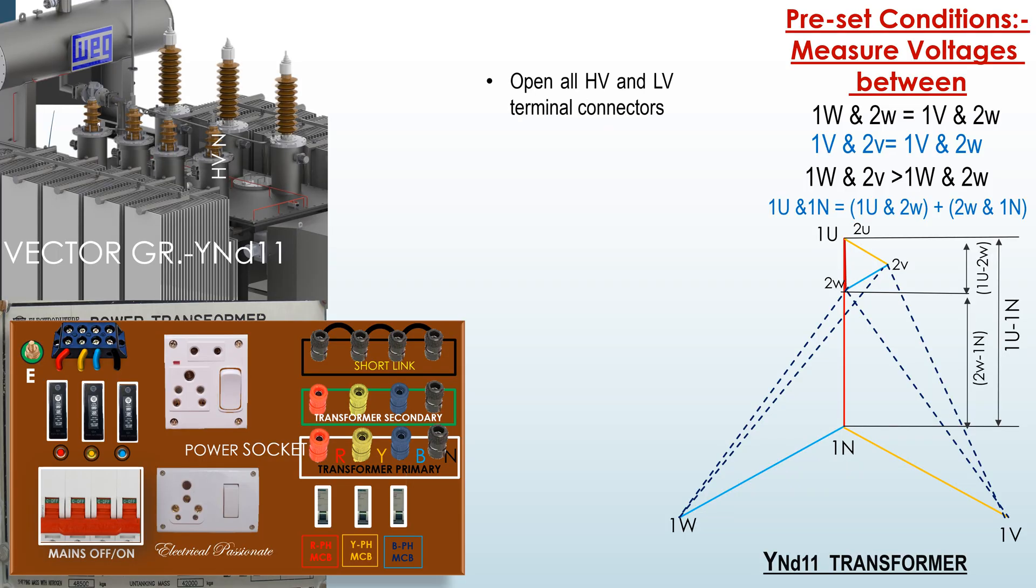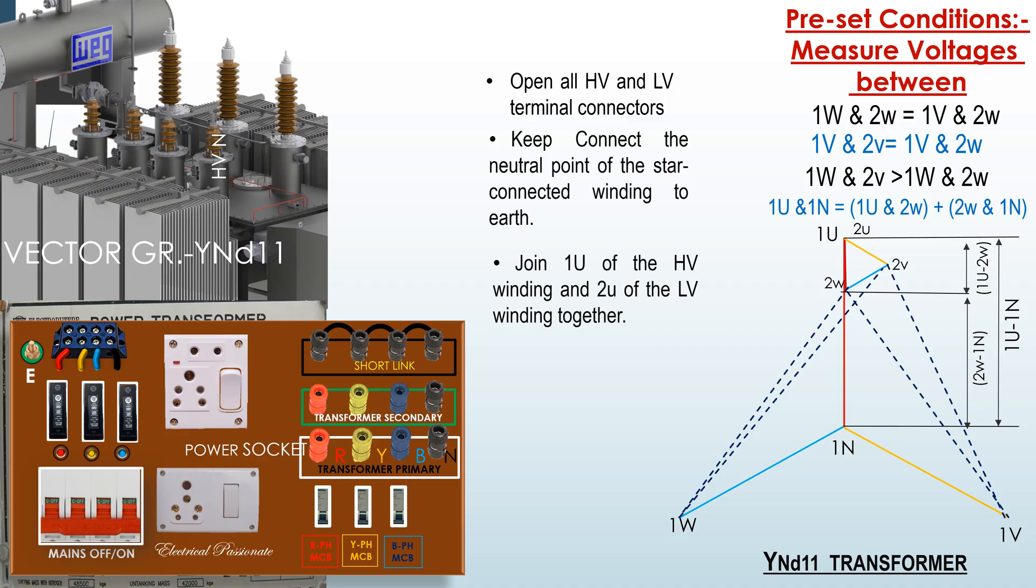Open all HV and LV terminals connectors. Keep connected the neutral point of the star connected winding to earth. Join 1U of the HV winding and 2U of the LV winding together at test board. Apply a 400 volt 3 phase supply to the HV terminals. Take care.